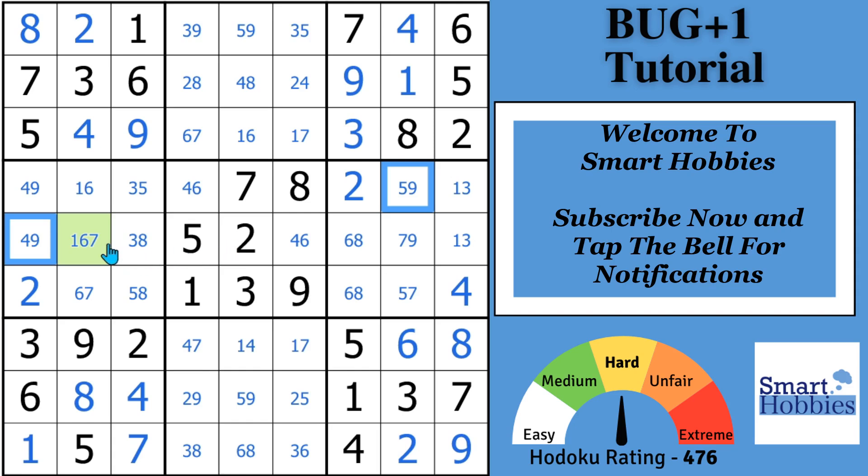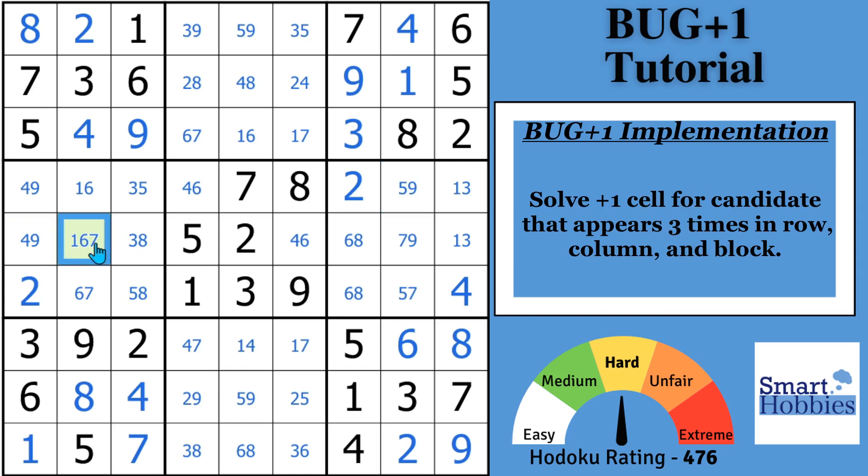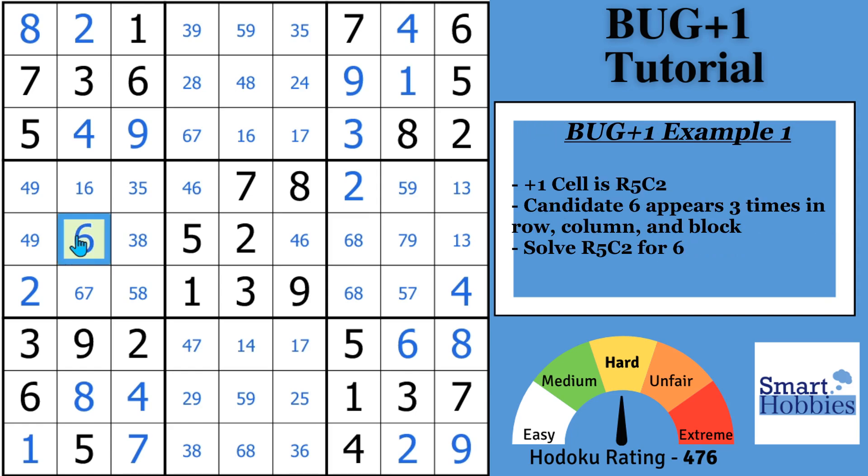So now, here's how you implement the bug plus one. You just go to the plus one cell right here and you look for the candidate that appears three times in the row, the column, and the block. And you might notice that you see a six in these three cells, a six in this column and in the block, and a six in these three cells. There's only going to be one candidate that will be shown three times. And it'll be three times in the row, column, and block. And then you just solve that cell, the plus one, for that candidate. That's going to be a six. Because this breaks the monotony of the deadly pattern by putting that candidate that appears three times right there.